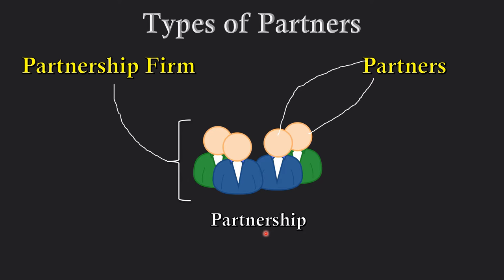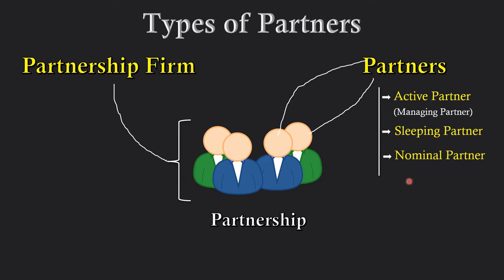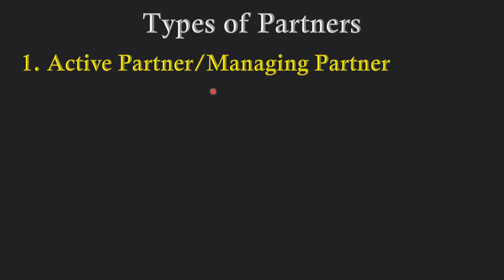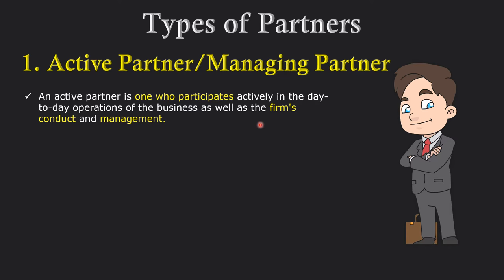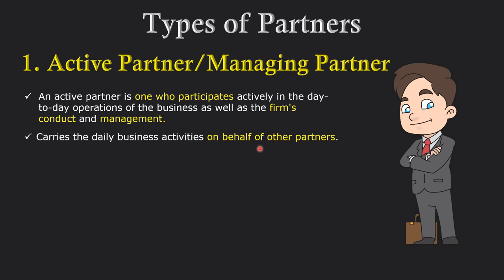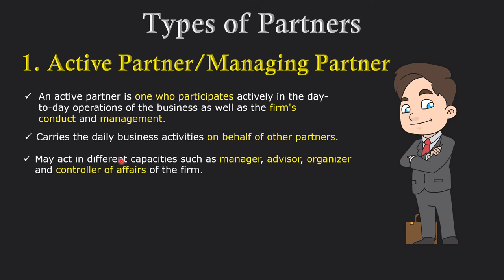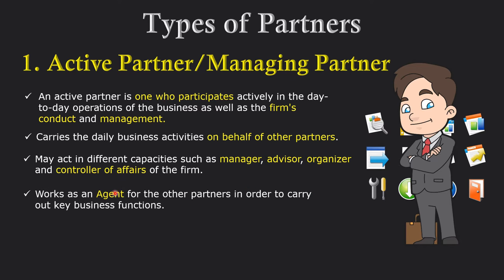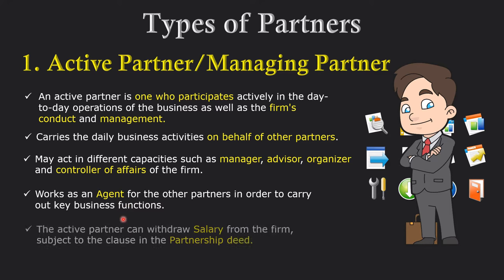Partners are also divided into many categories or types. The first category is active partner, also called managing partner. Active partners are those who actively participate in the day-to-day activities of the business — they manage, oversee, and on behalf of other partners act as manager, advisor, organizer, controller, and also as an agent of the firm. Sometimes active partners are also given a salary along with profit, though whether salary is paid must be mentioned in the partnership deed.